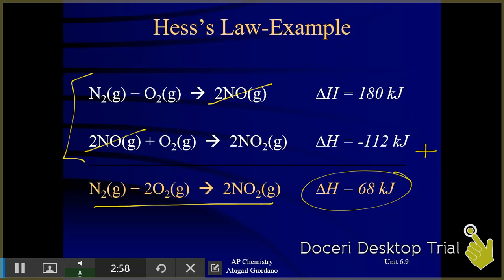The first step required 180 kilojoules — I use the word 'required' because it's positive, meaning it's an endothermic process. The second elementary step released 112 kilojoules — 'released' because it's a negative value indicating an exothermic process. But when I add these two processes together, overall this is an endothermic reaction.